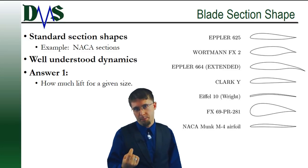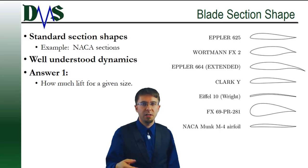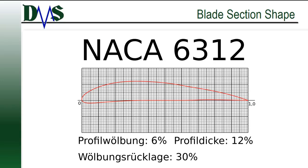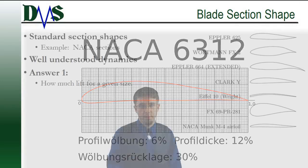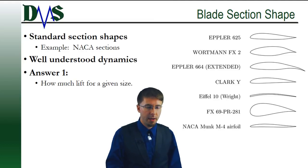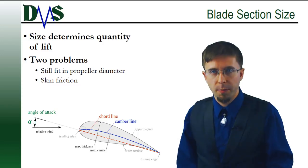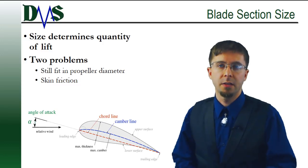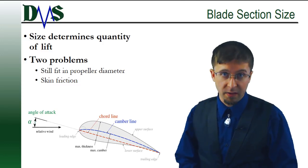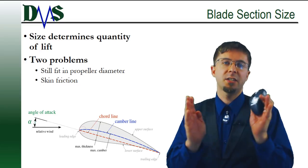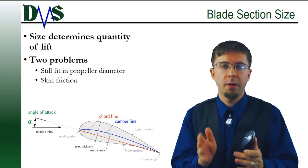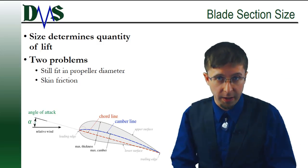So the designer starts by picking a blade section shape. These are usually standard section shapes that you can pick out of a book. They've been thoroughly tested and they yield predictable performance. But a shape just tells you a dimensionless answer. It's useless without answering the question of section size. So we know the blade section shape will determine the lift for a given blade size. So now the designer has to pick that size. They scale that section shape up to get the desired amount of lift from that one slice of the propeller blade.